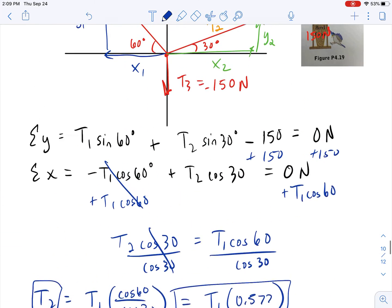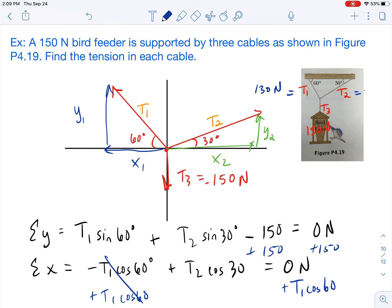All right, and so now we know all of them. T1 is 130, T2 is 75, and T3 is the 150. So I hope this video is helpful for you in solving your own tension problem where the angles are not the same. As always, like and subscribe if this video has helped you.